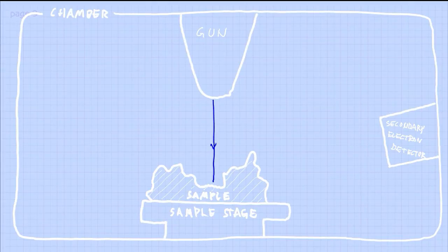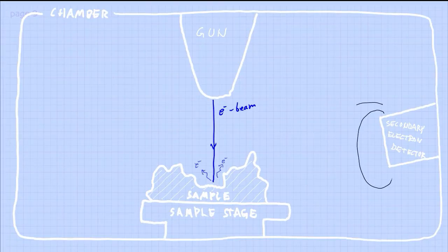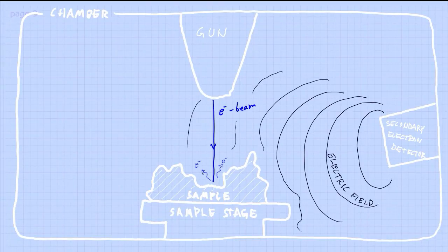The gun shoots the electron beam into the sample. And you can see that the sample has a small cave here also that we now hit. When the beam hits the sample secondary electrons will be emitted. And these will be collected by the secondary electron detector because it has an electric field around it that attracts the electrons. Sort of like a vacuum cleaner.